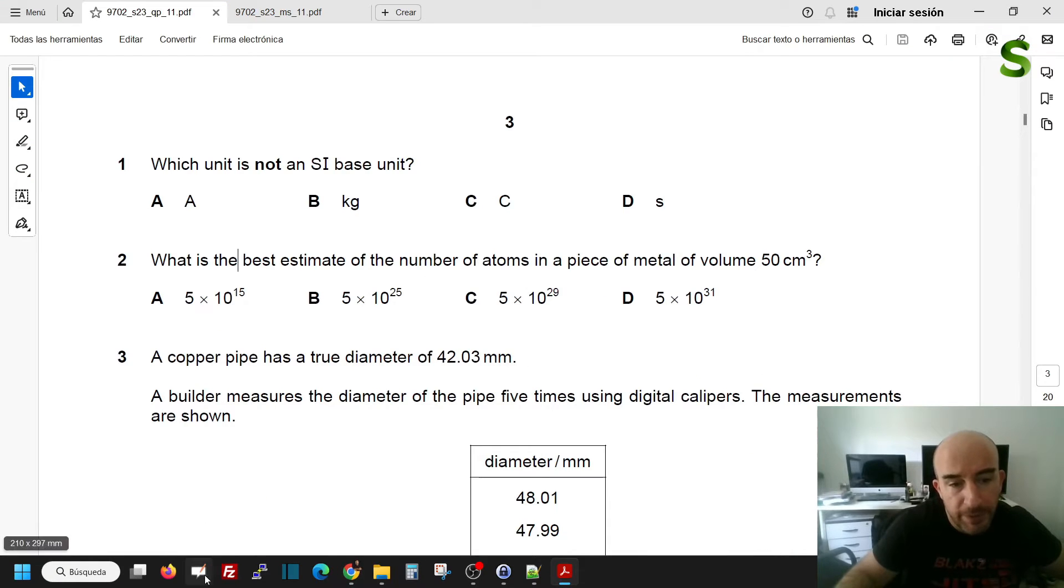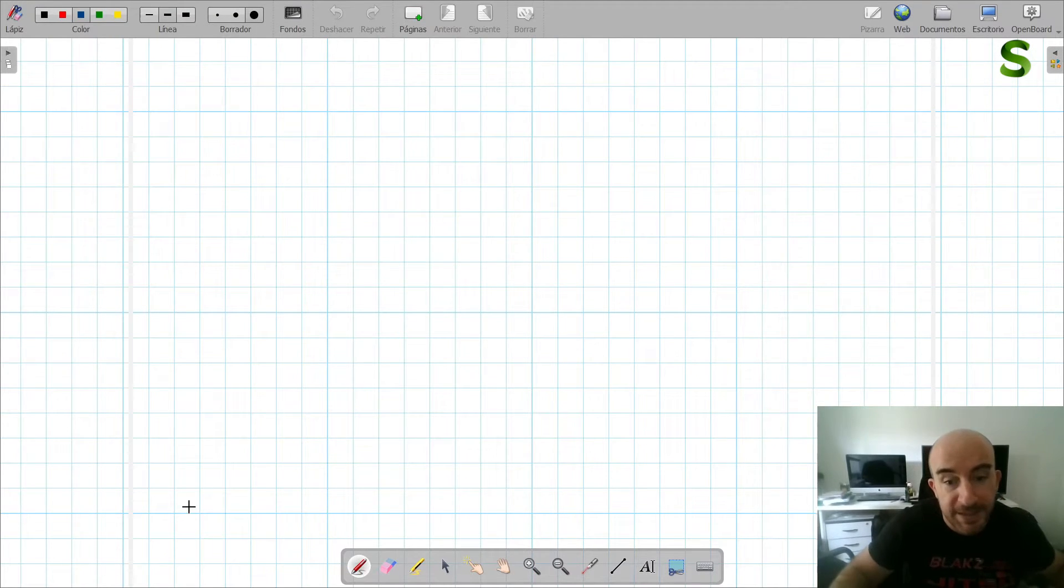So how can we solve it with that prior knowledge? And I insist, this means that you don't really need to know any density of metals or the weight of metals, just the diameter of an atom that works for any substance. So the diameter is 1.0 times 10 to the power of minus 10 meters. We're given a volume of 50 centimeters cubed.